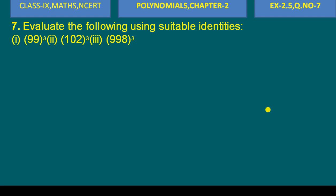Hello everyone, today we are going to solve question number 7 — evaluate the following using suitable identities, question number 2. This is for Class 9 Maths NCERT Chapter 2 Polynomials, from Exercise 2.5, question number 7.